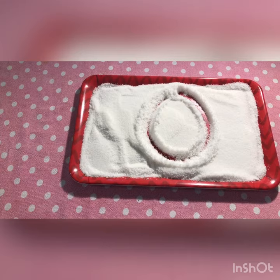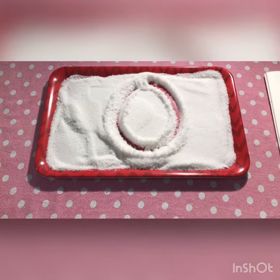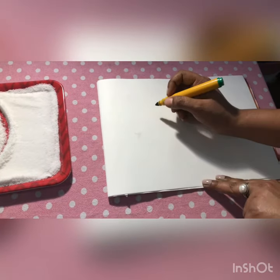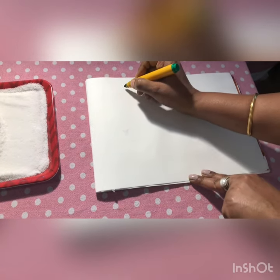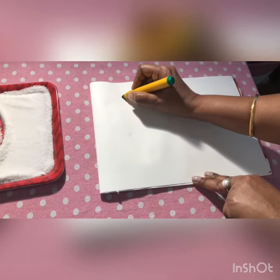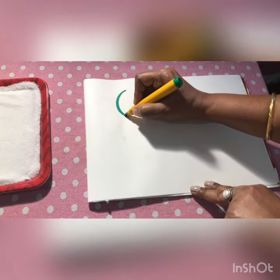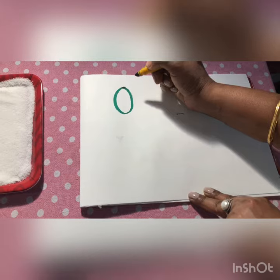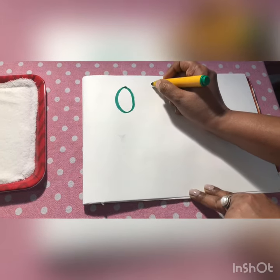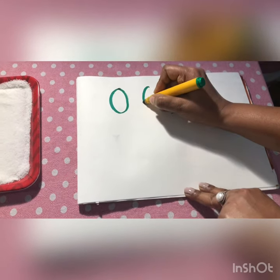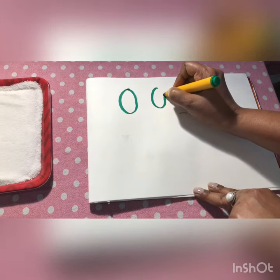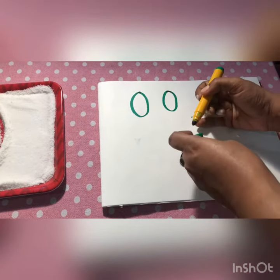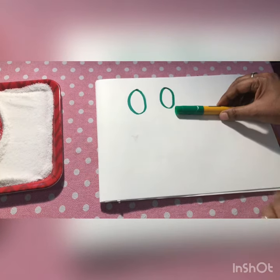Now let's see how we write letter O in the notebook. Start from the top, go down and come back up — letter O. Start from the top, come down, go up — letter O. So children, this is your letter O.